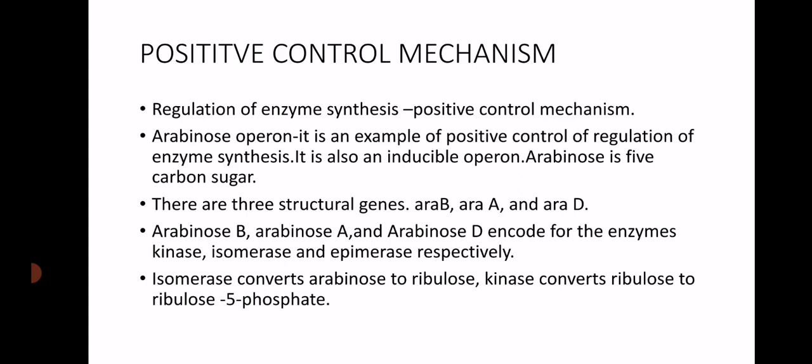Here we are going to study the positive control mechanism by studying the example of the arabinose operon. The arabinose operon is an example of positive control of regulation of enzyme synthesis. It is also an inducible operon — when arabinose is present, only then are the enzymes synthesized, similar to the lac operon. Arabinose is a five-carbon sugar.